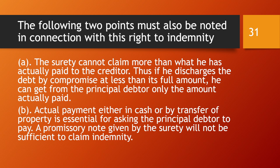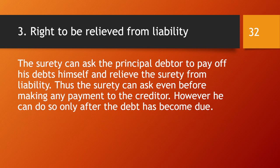Two important points regarding the right to indemnity: first, the surety cannot claim more than what he has actually paid to the creditor. If he discharges his debt by compromise at less than its full amount, he can recover from the principal debtor only the amount actually paid. Second, actual payment — either in cash or by transfer of property — is essential. A promissory note given by the surety will not be sufficient to claim indemnity, as it is merely a promise to pay, not an actual payment.